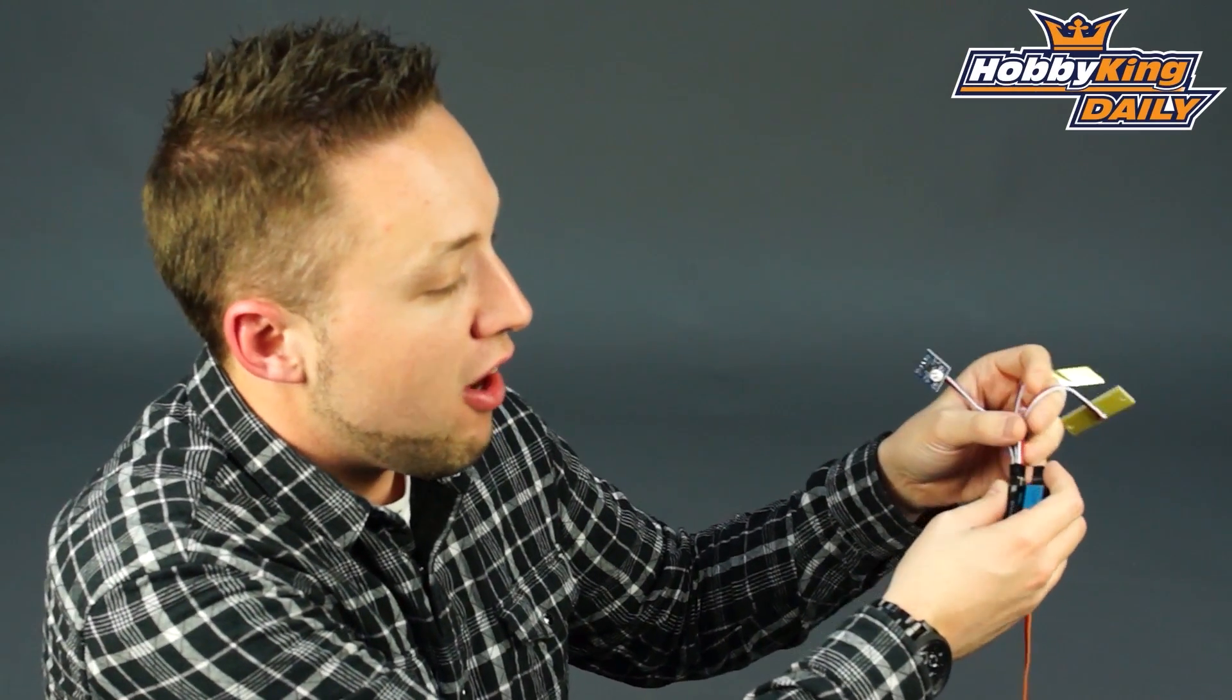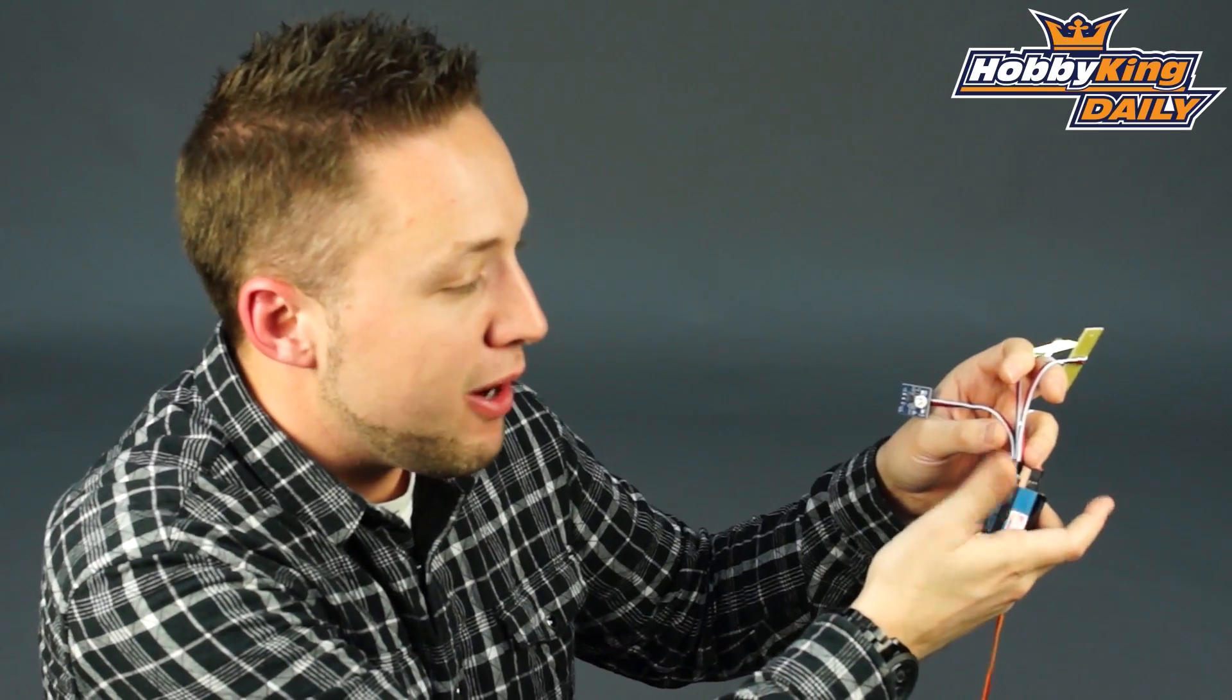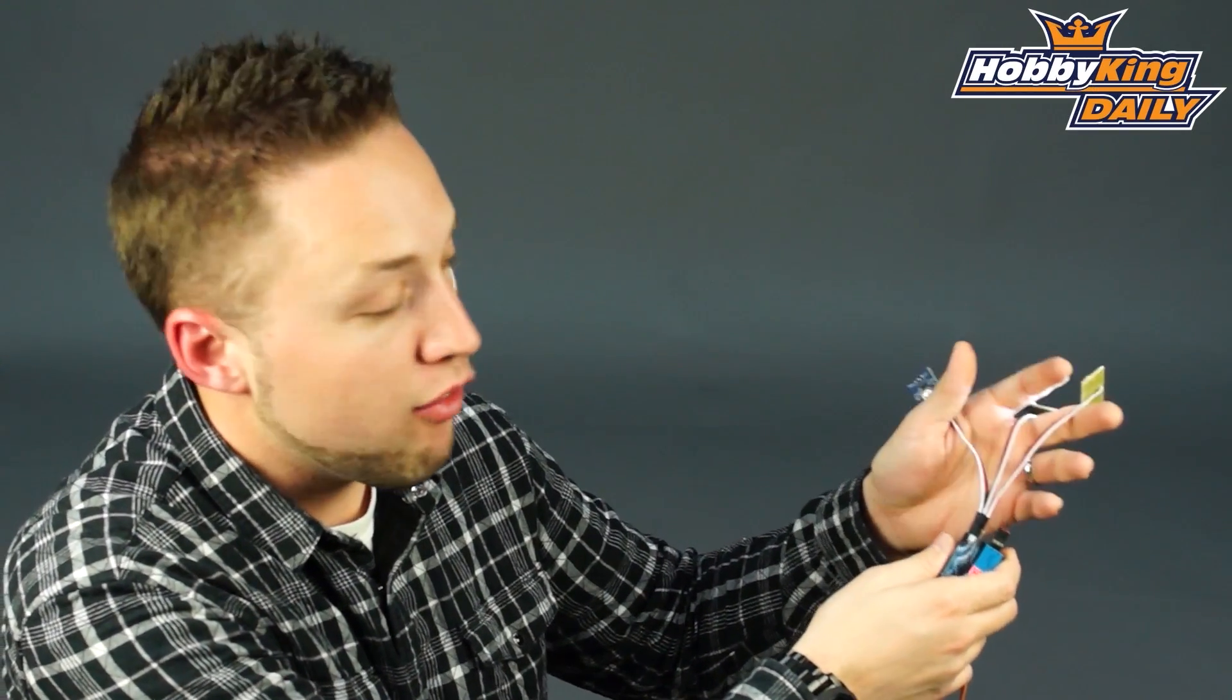You can plug them right in. They've got a JR style plug. So you can just plug that directly into your receiver and any spare channel or even Y off of one of your servo leads as well.